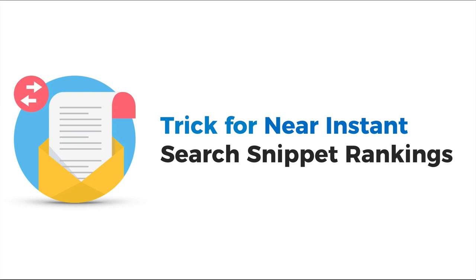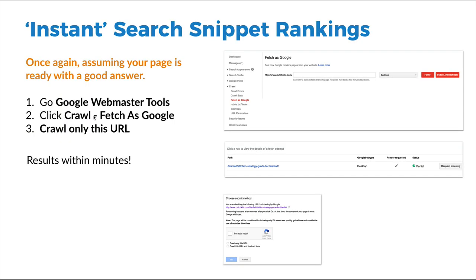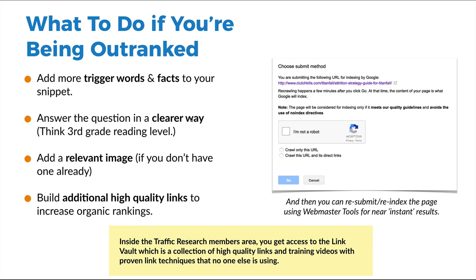Here's a trick for near-instant search snippet rankings. Optimize your page by answering the query using the exact code and trigger words. Once you're ready, go to Google Webmaster Tools, do 'Crawl > Fetch as Google,' then 'Crawl this URL only.' Put whatever URL you created the answer on, do 'Fetch and Render,' then click Submit. Within minutes, Google is going to recrawl your page and put you in contention for search snippets. I've done this in less than ten minutes and had the search snippet — we went from nothing to having half the front page with a search snippet. This is the fastest way to get exposure on Google.